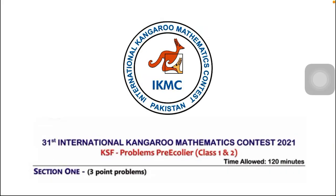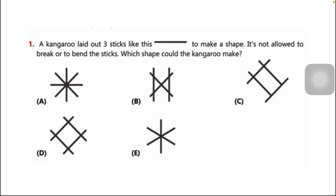The video is for IKMC International Kangaroo Mathematics Contest, and we are preparing from past papers of 2021 for pre-ecole year class one and two. Let's move to question number one. A kangaroo laid out three sticks like this to make a shape. It's not allowed to break or to bend the sticks. Which shape could the kangaroo make?